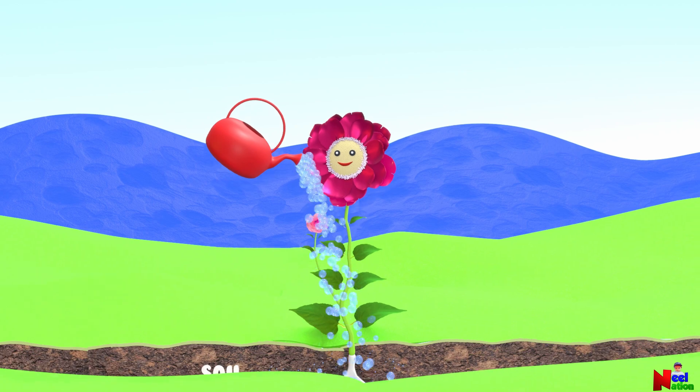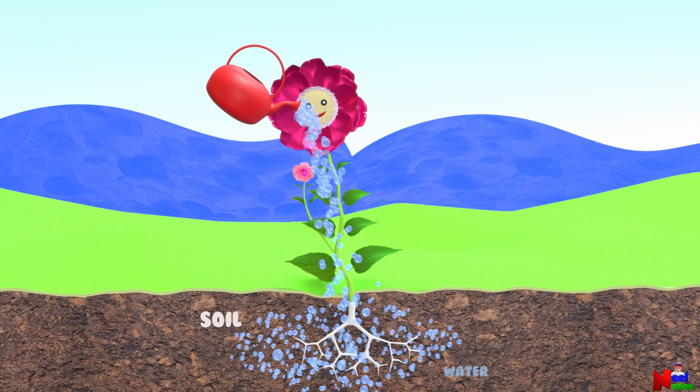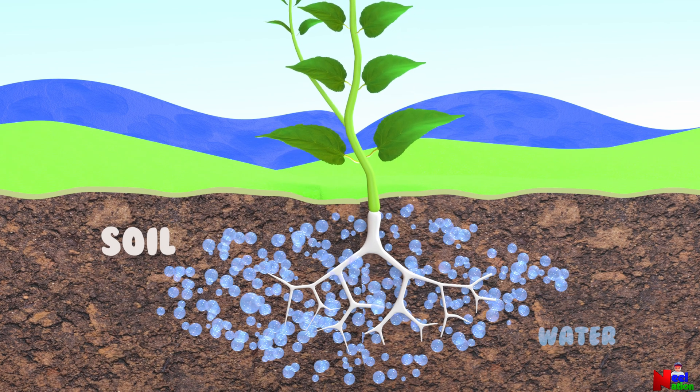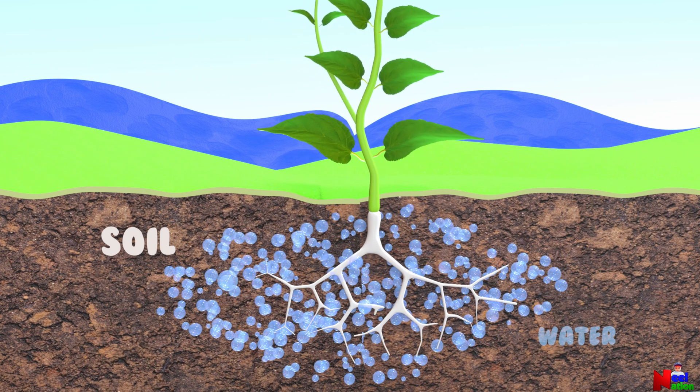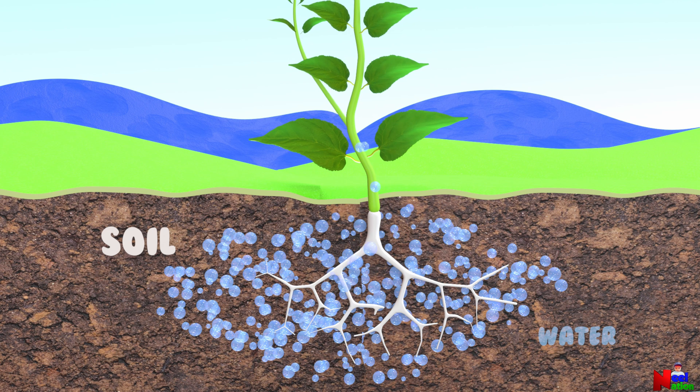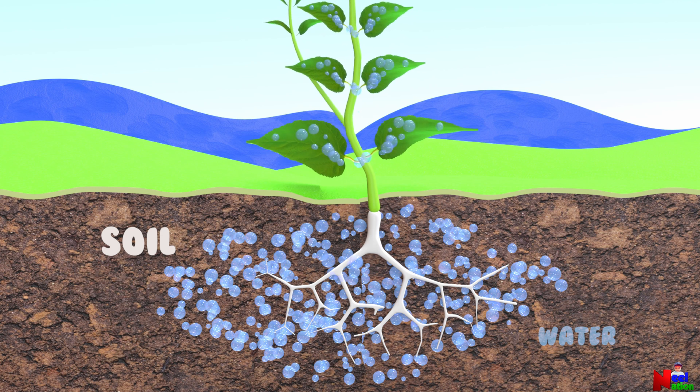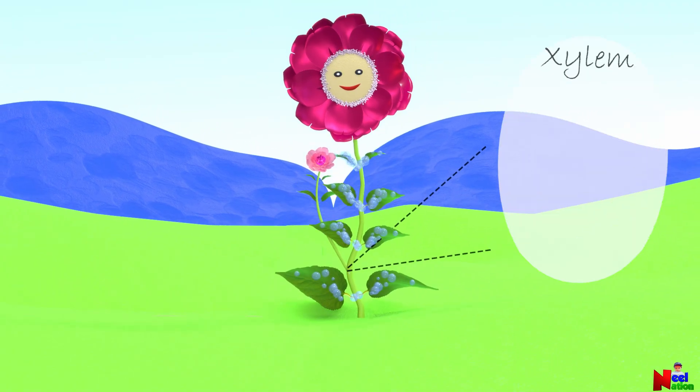Plants absorb water from the soil using their roots, which act like tiny straws. The roots not only collect water but also gather nutrients dissolved in water. This water then moves upward through a network of tiny tubes in the plant's stem called xylem.